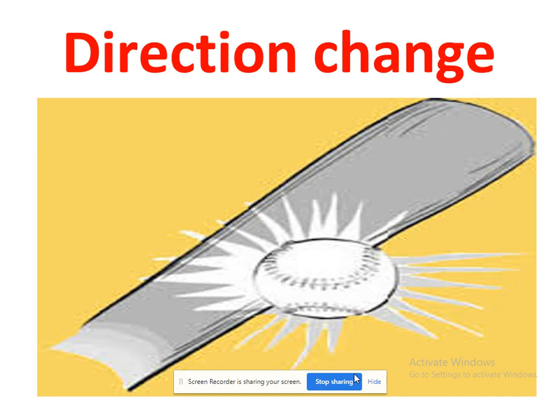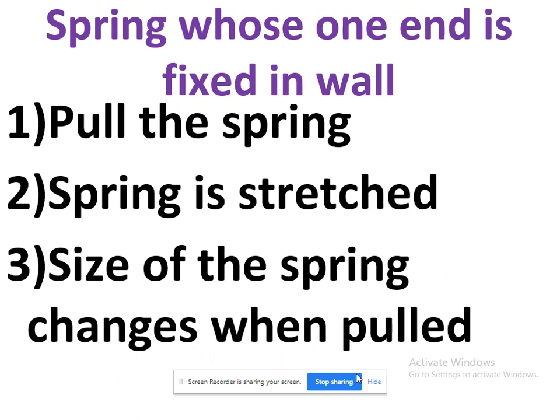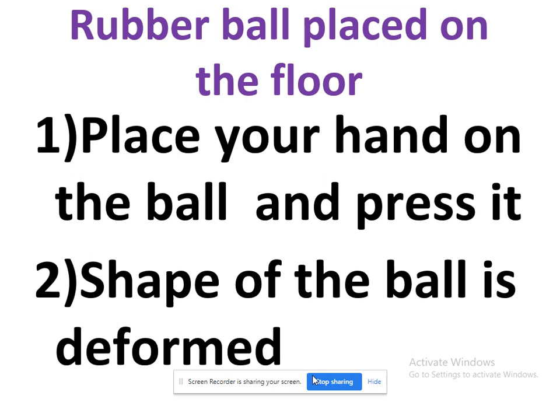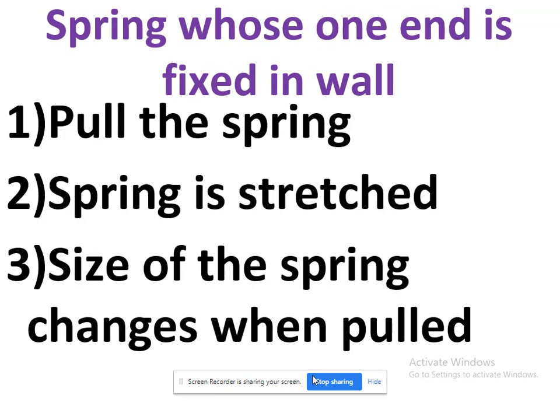You can also see figure 9.2 in your textbook: a spring whose one end is fixed to a wall. When the spring is stretched or pulled, the size of the spring changes. Similarly, you can use a rubber band — if you stretch it, it will change its shape. So force can also change the shape of a body.